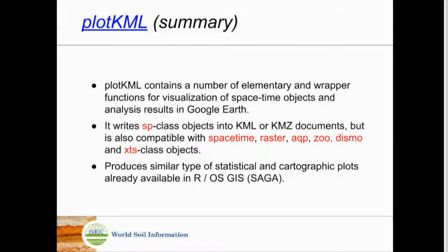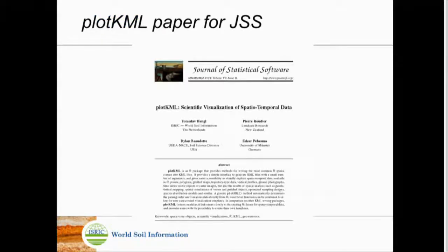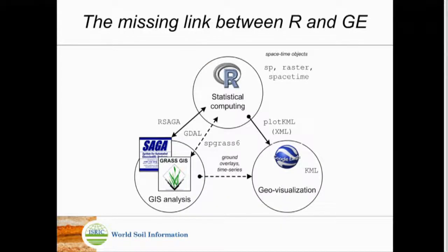I have a GIS background, so I tried to program it in a way that creates what they call cartographically correct output. For example, if you use colors you want to see a legend, and if you use different graphical elements you want them to be efficient so that somebody looking at those maps can quickly read and see what's going on. There's also the paper on plotKML if you're interested in more detail.